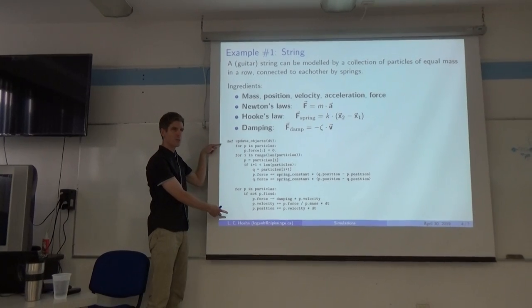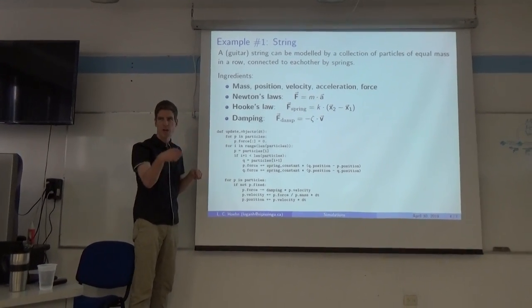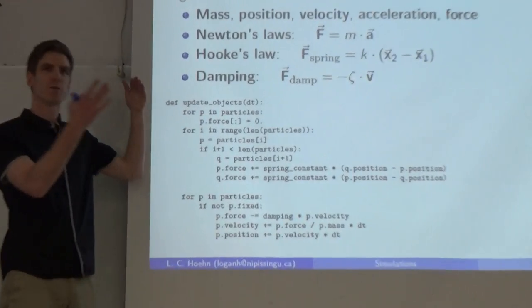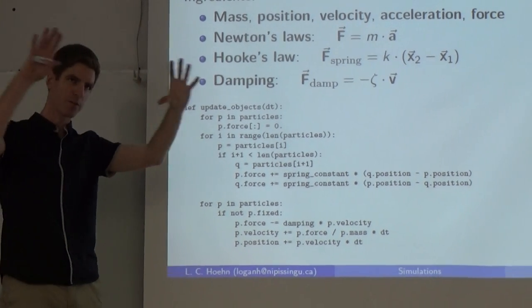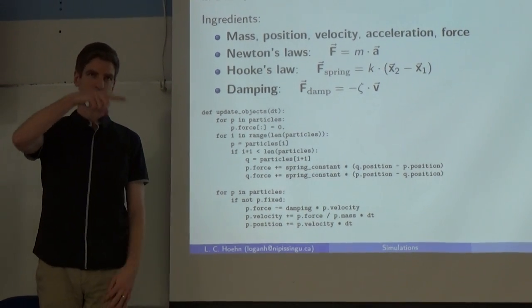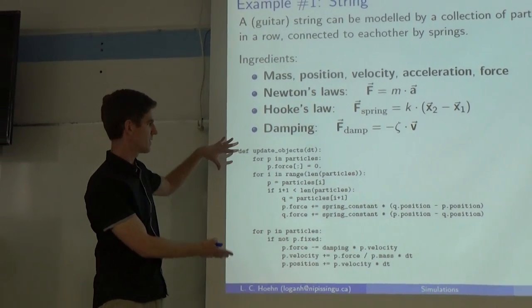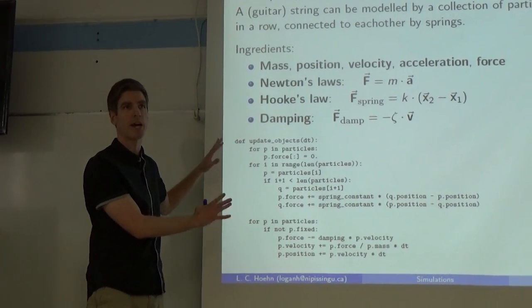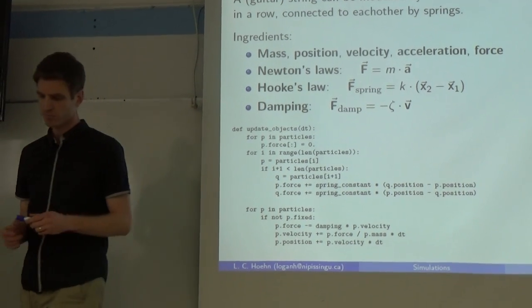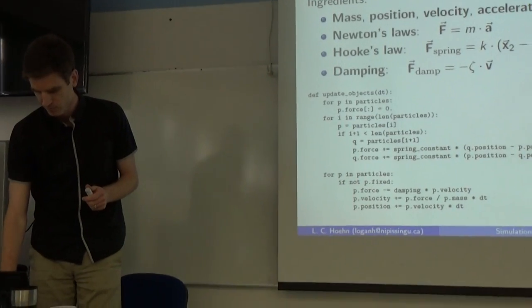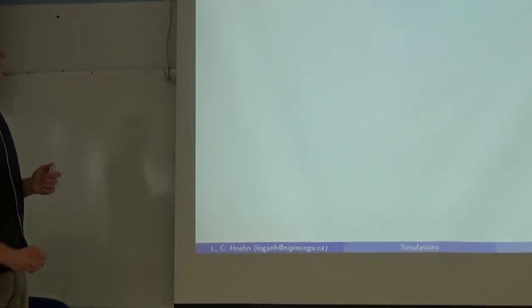By the way, this code is just for updating those objects. Well, there is more code in the program to make the graphics, to make the window, to watch for mouse clicks, and this kind of thing. So it's a little bit bigger, but this is the substantial part that has to do with the mathematics. That's all. Okay, let's look at a second example.